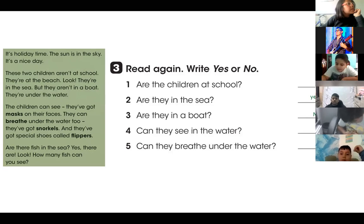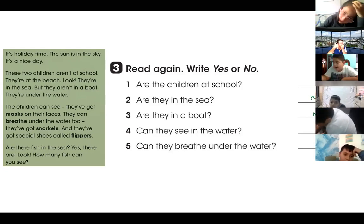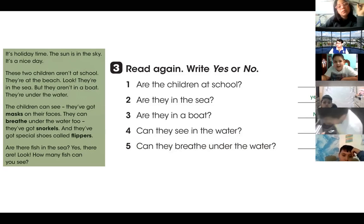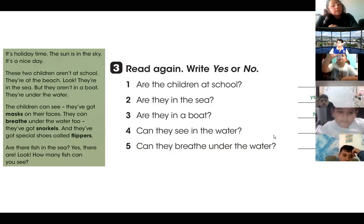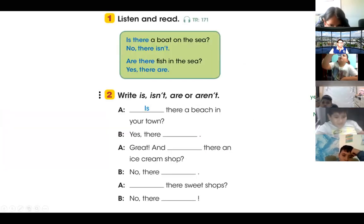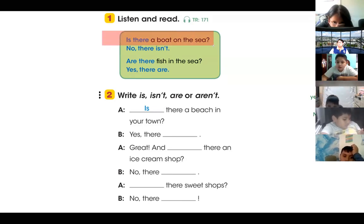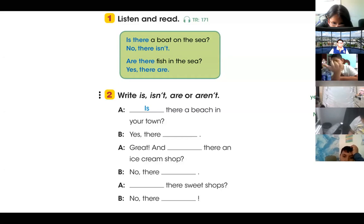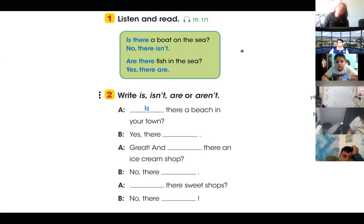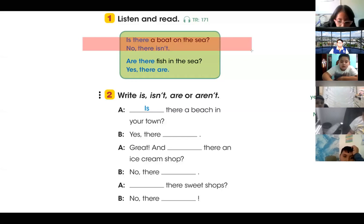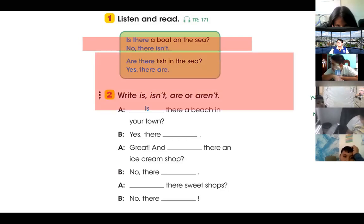Right? Do you remember? They put the snorkel here. Now let's continue — we have to go to the next part. This is what we are going to do today: the question 'Is there a boat on the sea?' You're going to listen first. Listen please: 'Is there a boat on the sea? No. There isn't. Are there fish in the sea? Yes. There are.'